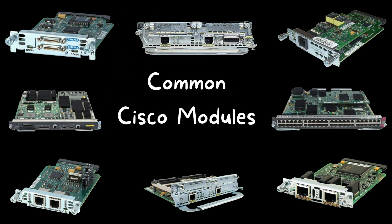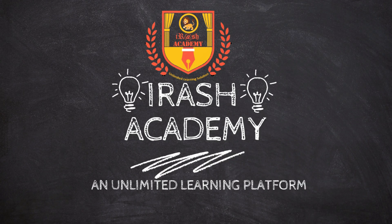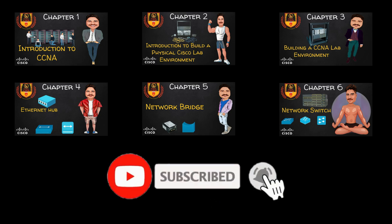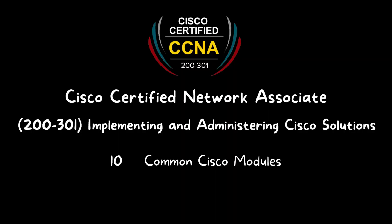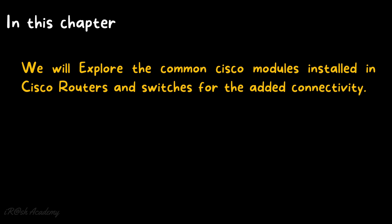Welcome to Irash Academy, an unlimited learning platform. Please subscribe to the channel for more videos. Welcome to CCNA 200-301: Implementing and Administering Cisco Solutions. This is Chapter 10: Common Cisco Modules. In this chapter we will explore the common Cisco modules installed in Cisco routers and switches for added connectivity.